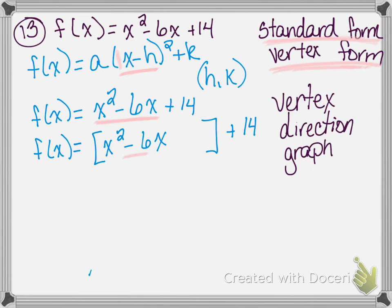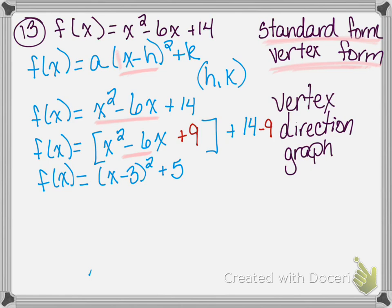So I am going to add 9 inside my brackets — I got 9 by taking half of negative 6 and then squaring it. If I add 9 inside my brackets, I need to subtract 9 on the outside to keep it balanced. Now we're going to factor x squared minus 6x plus 9. So we're going to have f of x equals x minus 3 squared, then simplifying plus 14 and minus 9 gives us plus 5.